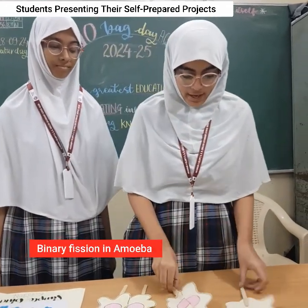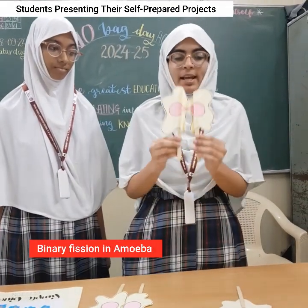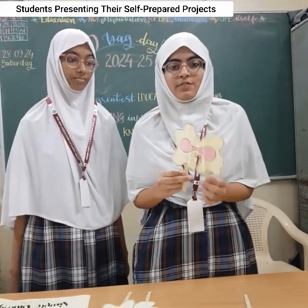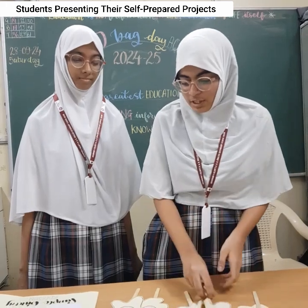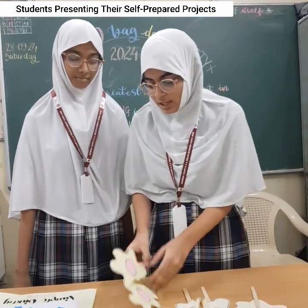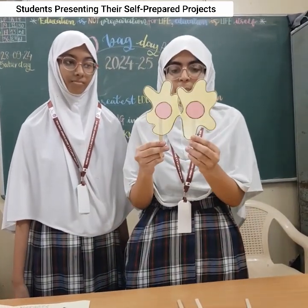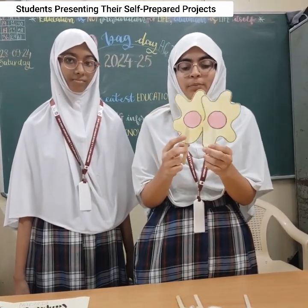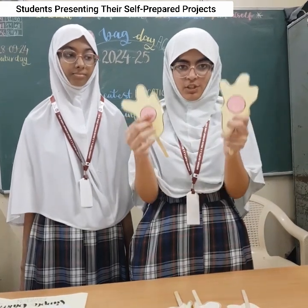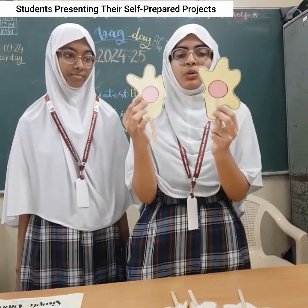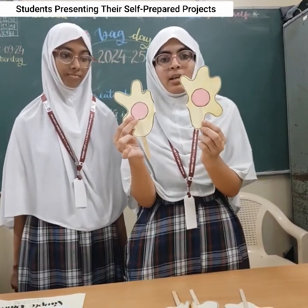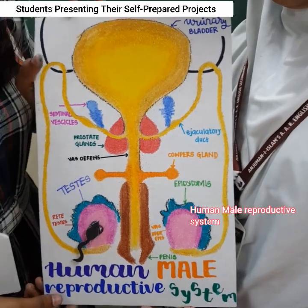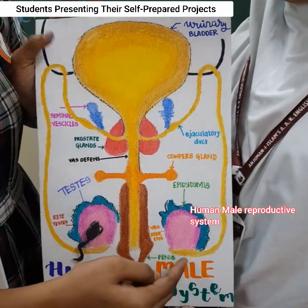Amoeba: the parent Amoeba will extend and nuclear division will take place. When nuclear division takes place, two nuclei will form. When the two nuclei separate, they get detached from each other and two daughter Amoebas will form.